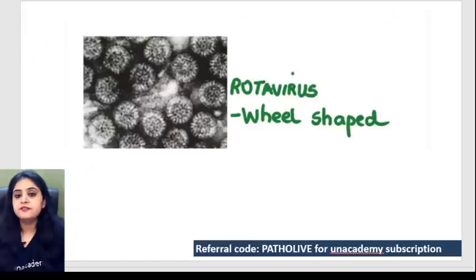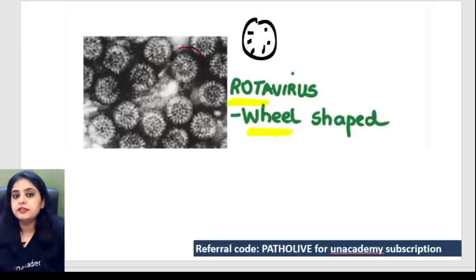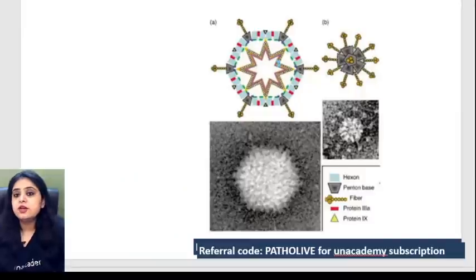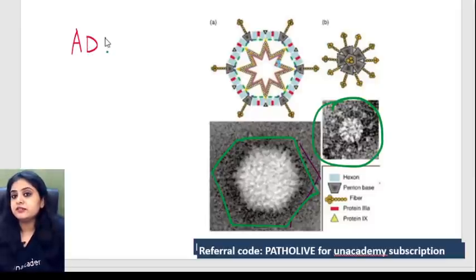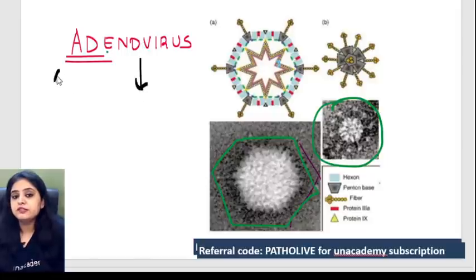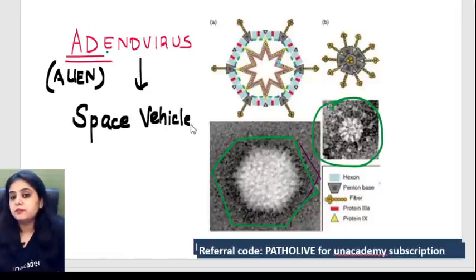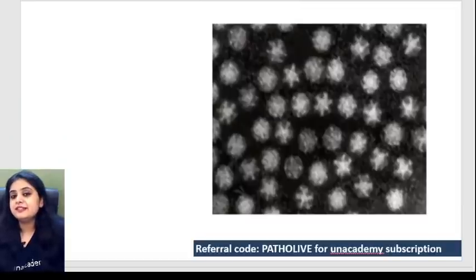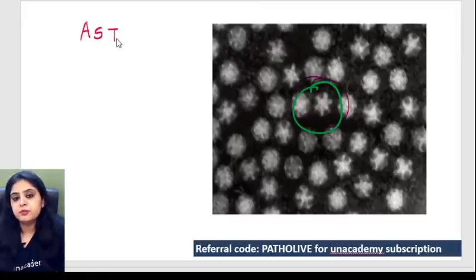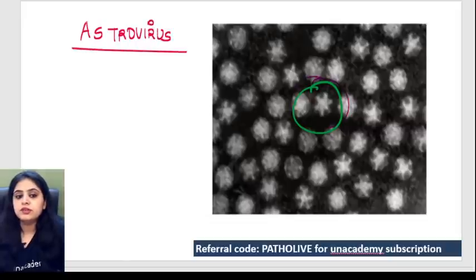The wheel-shaped virus with spokes is rotavirus. Next, the virus that looks like a space vehicle is adenovirus — remember it as 'Adeno = Alien', and aliens come in space vehicles. Finally, the star-shaped virus is astrovirus — astro sounds like a star. So shapes are sorted: rotavirus=wheel, astrovirus=star, Ebola=bowl of spaghetti, pox=brick, rabies=bullet.